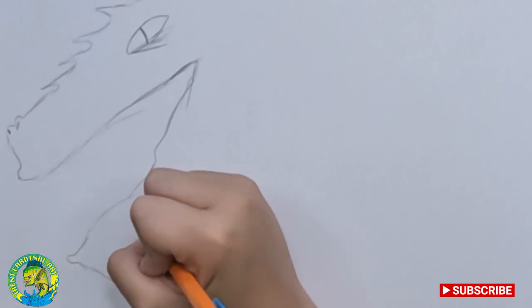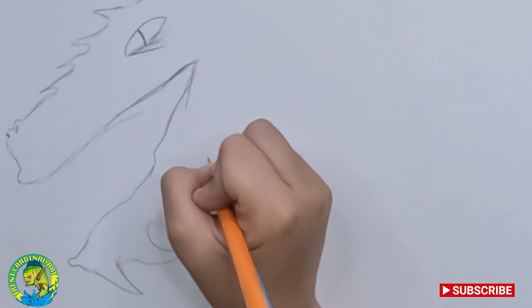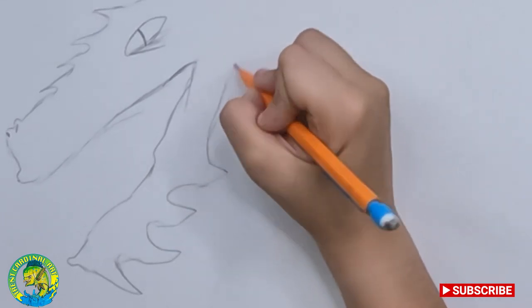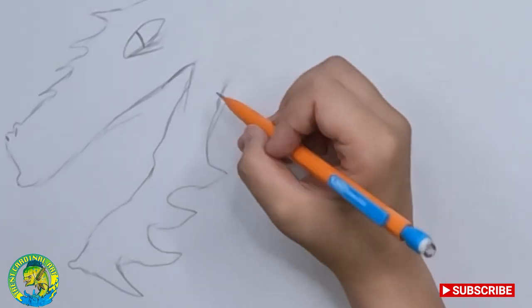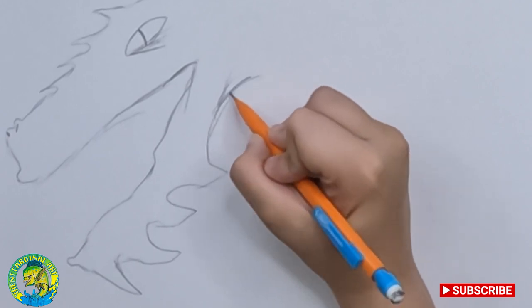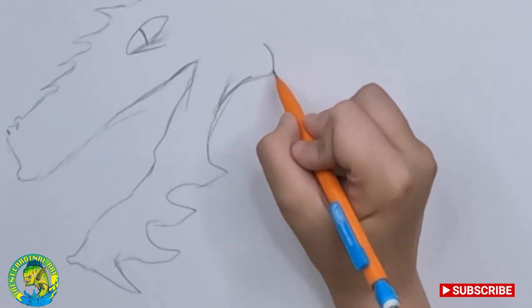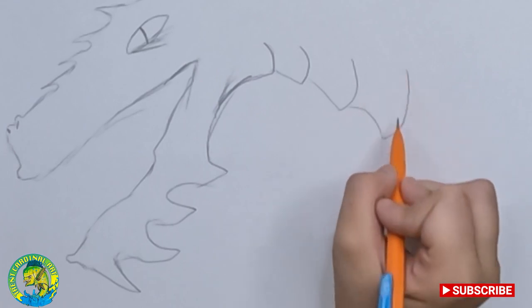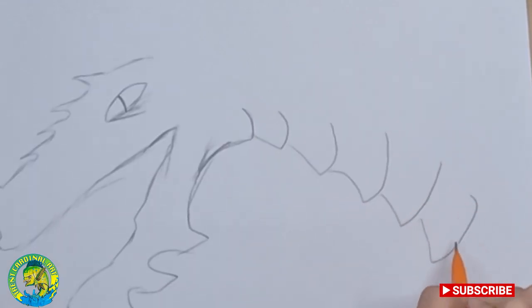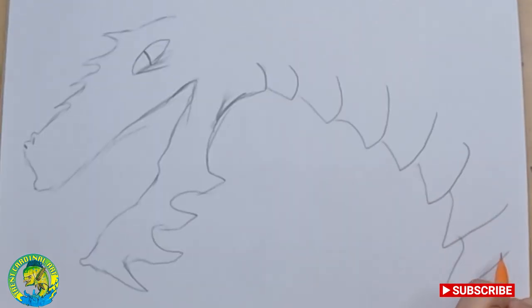At the bottom you're gonna make one, two, three, four zigzag lines. Then right here, it's gonna go out like a curve. Just keep doing that pattern, but it gets bigger and bigger. Like that.